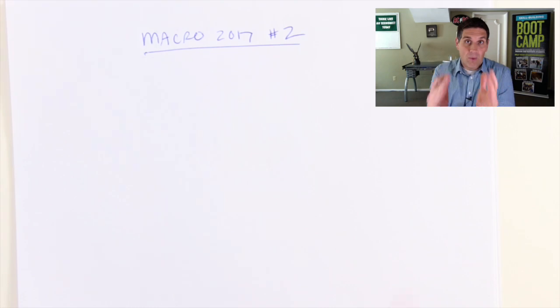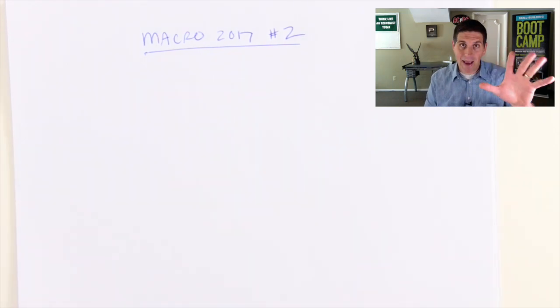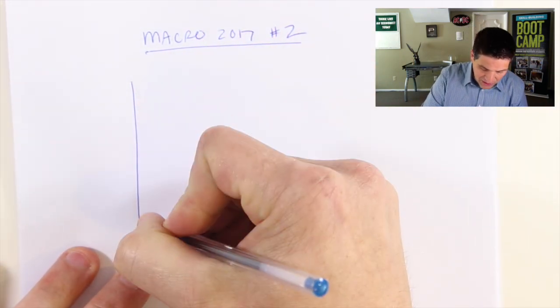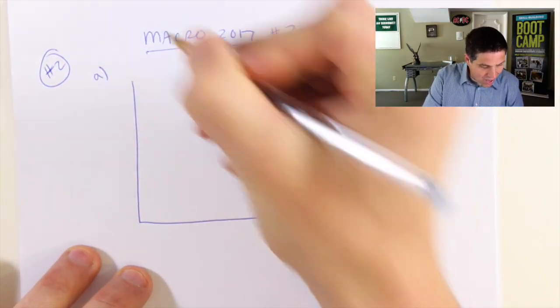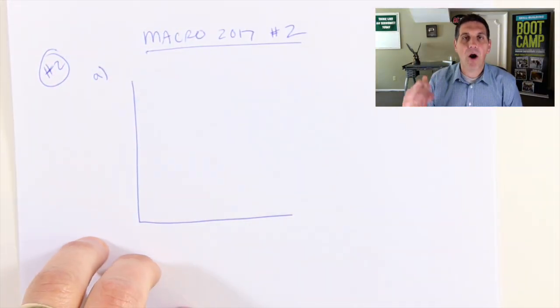It starts by asking you to draw one of the key graphs. Remember, there are five key graphs in Macroeconomics. In question number two, part A, they ask you to draw the money market graph.